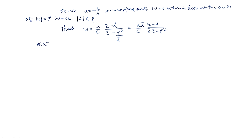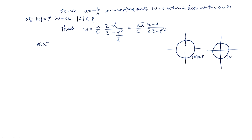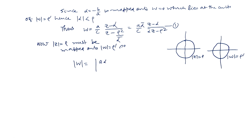We want to map the boundary of the disk in the z plane to the boundary of the disk in the w plane, so mod of z equal to rho should be mapped to mod of w equal to rho dash. Taking mod of w using equation (1): mod of w equals mod of (a · alpha conjugate / c) times mod of (z minus alpha) / (alpha conjugate · z minus rho²).